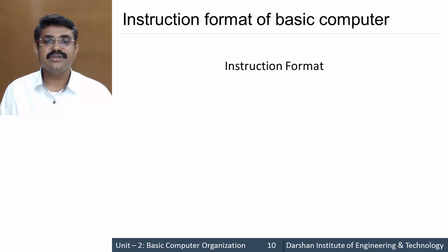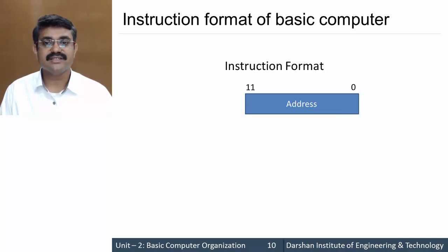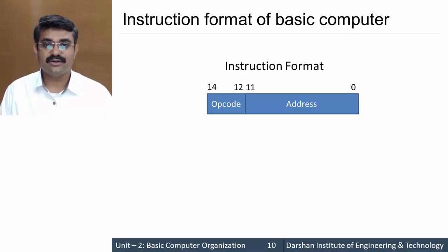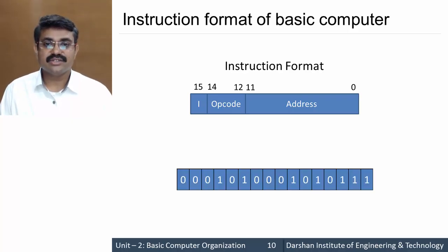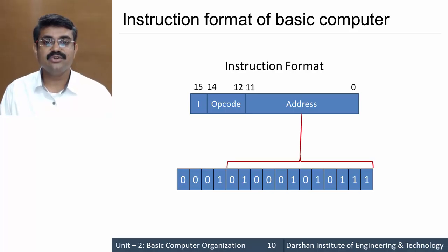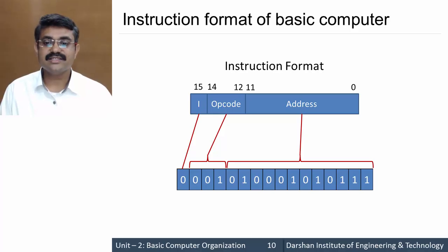Looking at the instruction format in detail: bits 0 to 11 (12 bits) are for the address, bits 12 to 14 (3 bits) are the opcode, and bit 15 — the most significant bit — is the I-bit, where I stands for direct/indirect addressing. Consider a 16-bit binary instruction code: bits 0 to 11 are the address, the next three bits are the opcode, and the MSB is the I-bit. The I-bit will be discussed in detail in the next part.